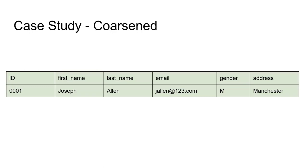For the purposes of this study, all we need to know is which rows of our data are in Manchester and which rows aren't. There's only one row, and that one row is in Manchester. So now we can answer our research question — what gender are the individuals of Manchester — and we get 100% male. It's not a great study, but we've somewhat protected this individual. We don't know their address now, which we would have done before.